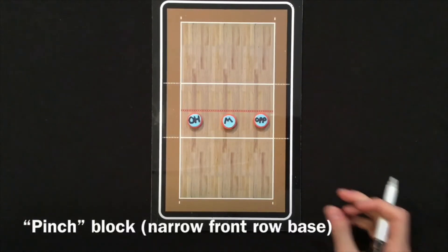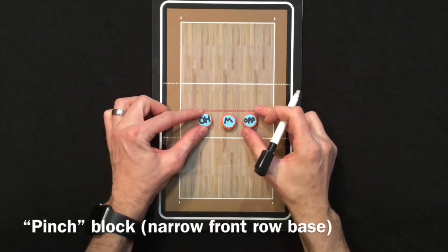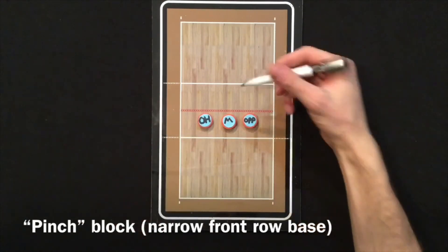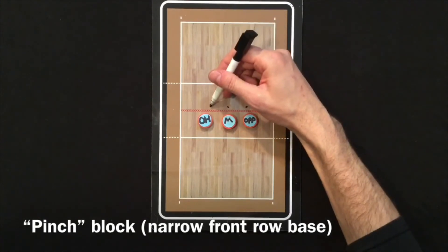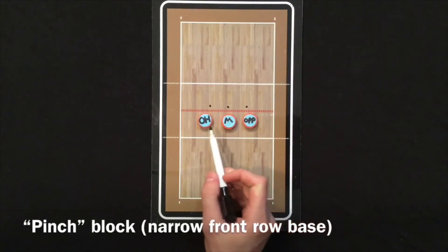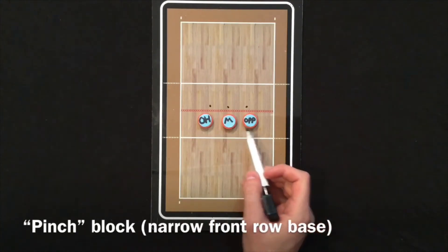Also in the front row you can do what's called a pinch block. So you're going to pinch your wing defenders, wing blockers in. Obviously your middle might stay in the middle and you're going to pull in to help with the middle blocker from the other team. So you're going inside out.